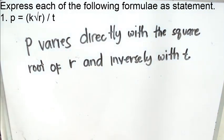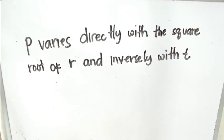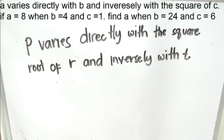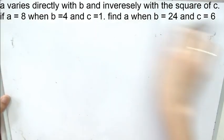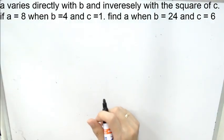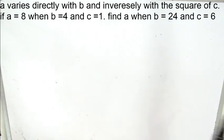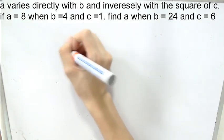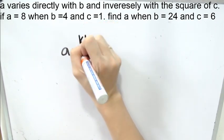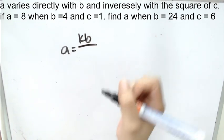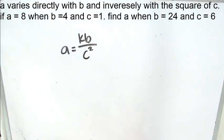Let's have our third example. In our third example, this is the situation part. A varies directly with b, and inversely with the square of c. Take note, the first thing you do is to write the statement first into the formula. A varies directly with b, and inversely with the square of c. That's the first step.